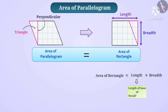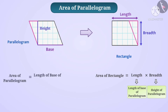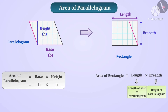Area of the rectangle formula is length into breadth. So, the length is the length of the base of the parallelogram, and the breadth is the height of the parallelogram. So, area of the parallelogram is equal to the length of the base of the parallelogram into the height of the parallelogram. In short, area of the parallelogram is equal to base into height, represented as B × H.